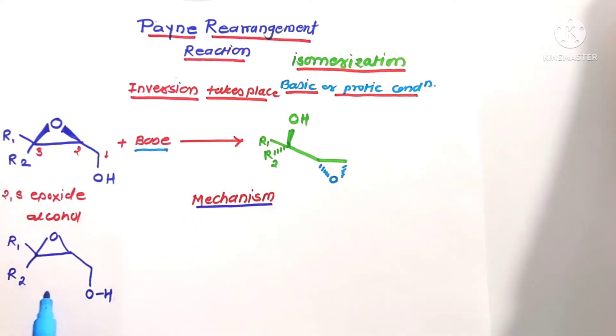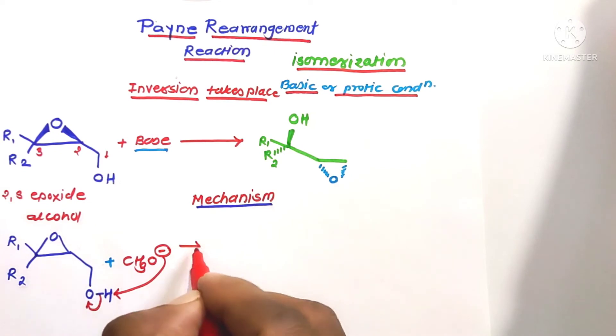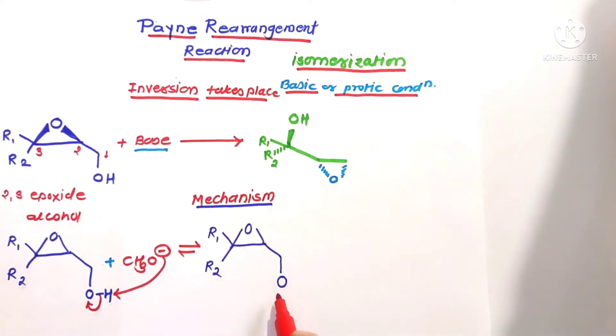The substrate molecule, 2,3-epoxide alcohol, is reacted in presence of basic catalyst, that is methoxide. The base CH3O minus abstracts acidic protons from the alcohol molecule. Then this bonding electron shifts toward the oxygen atom to form the molecule where this oxygen contains negative charge, that is electron-rich center.